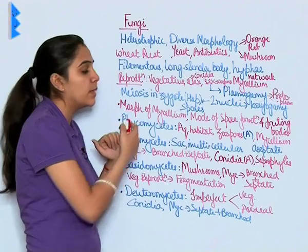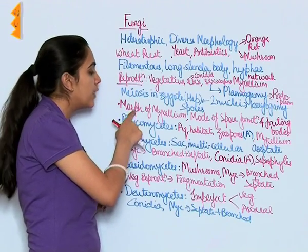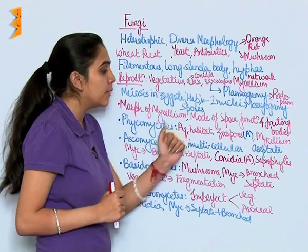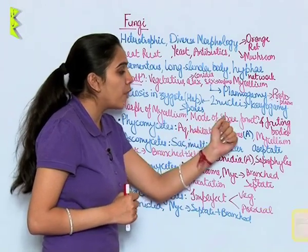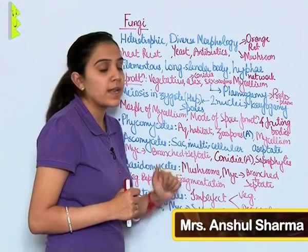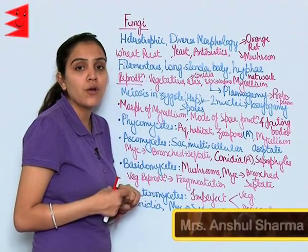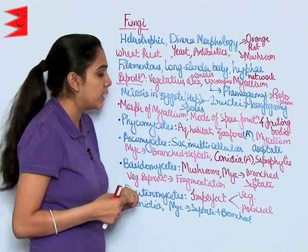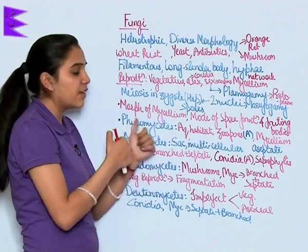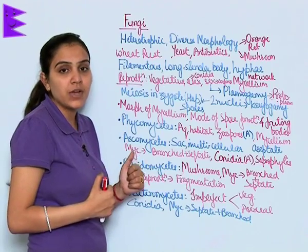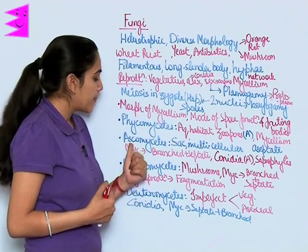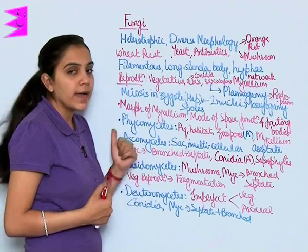The classification under this kingdom is done on the basis of morphology of mycelium, mode of spore formation, as well as mode of formation of fruiting bodies. On this basis, fungi have been classified into Phycomycetes, Ascomycetes, Basidiomycetes, and Deuteromycetes.